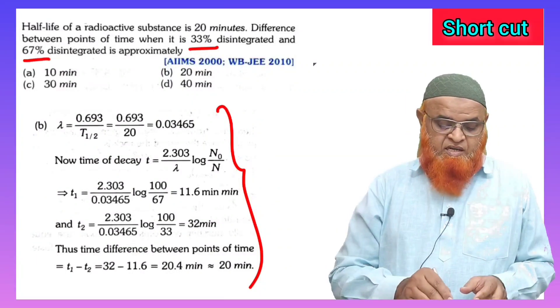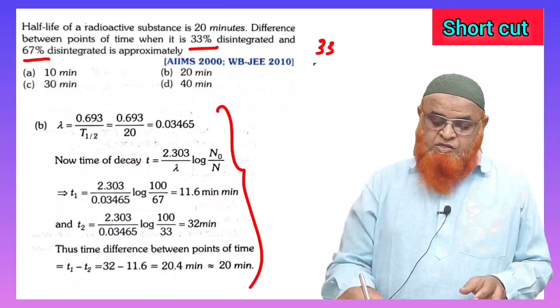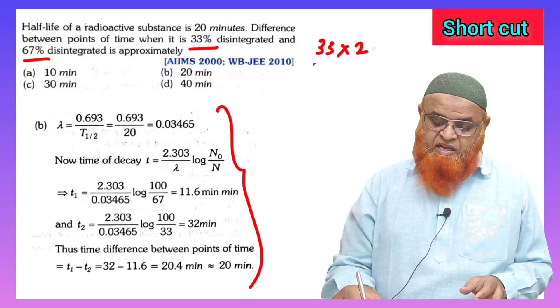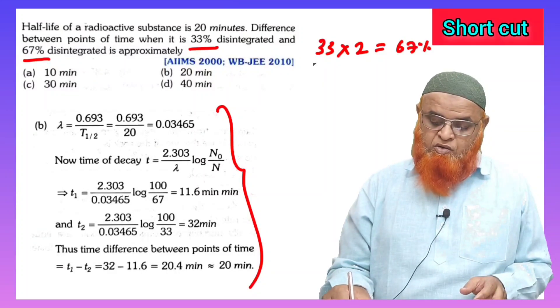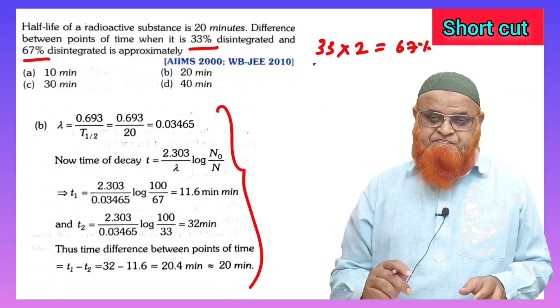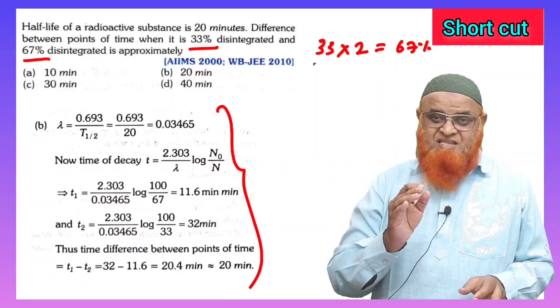as 33 percent and 67 percent. If you observe here, 33 percent doubled gives approximately 67 percent. You all know this. So when the percentage of one is double